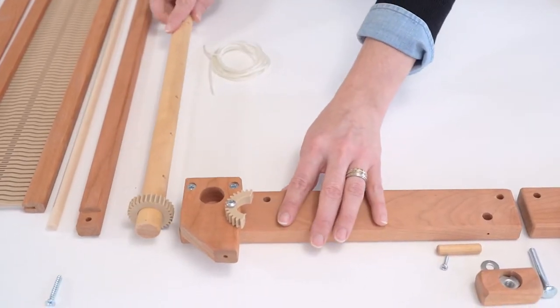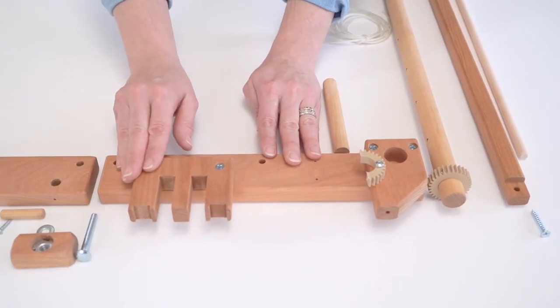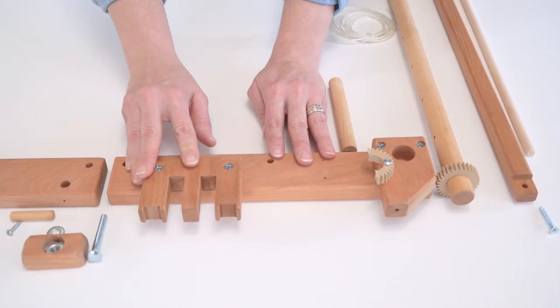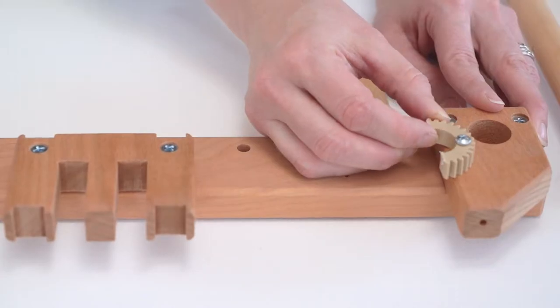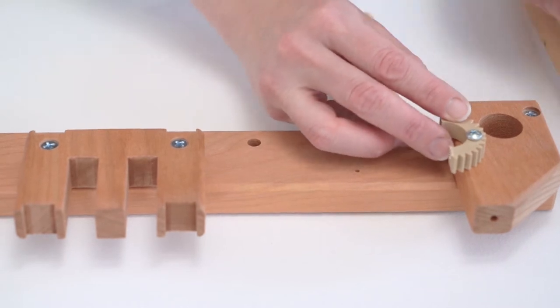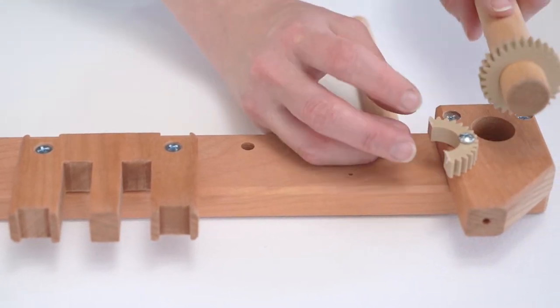This is the fabric beam and then on the back side you've got the shed block and this is where the heddle fits in. You will have attached a half moon piece that corresponds with the warping beam on the back side of the loom.